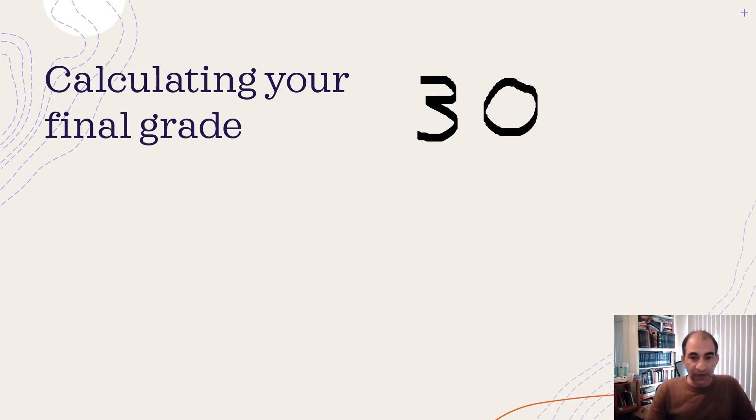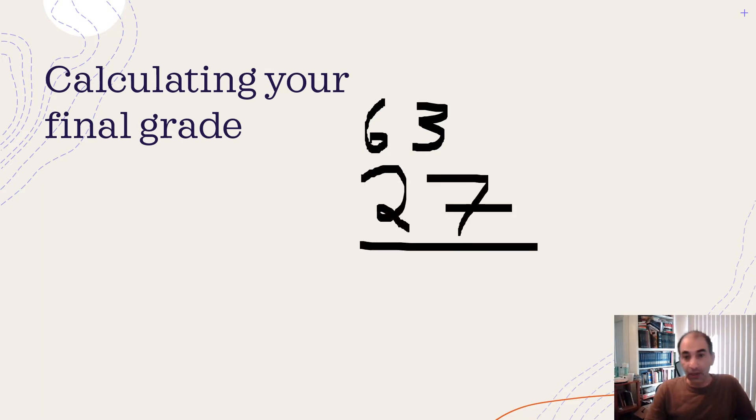If you've calculated everything and let's say you've got a total of 63 points, and then the final is worth 30, it tells you you need to make 27 out of 30. That gives you your 90 points. That's for an A, right?